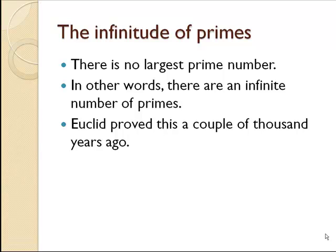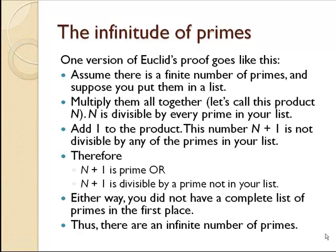One version of Euclid's proof goes like this. If we assume that the number of primes is not infinite — say we have a finite number of primes — write them all on a list. Then we multiply all of those primes together to get some number, capital N. Capital N is divisible by every prime in the list, because that's how we made it. If we add one to N, then N plus one is not divisible by any of those primes, because it always has a remainder of one. Therefore, either N plus one is prime, or if it's not prime, by the fundamental theorem of arithmetic it's divisible by a prime that's not on the list. Either way, we don't have a complete list of primes — and therefore there's an infinite number of primes.